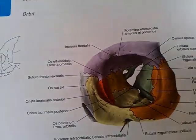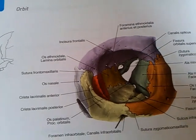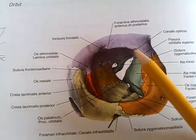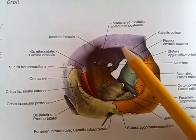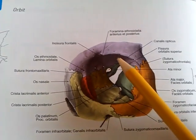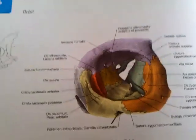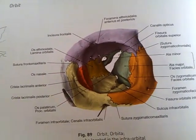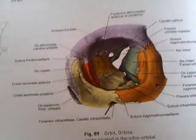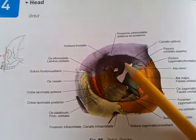Now you have the superior, medial, inferior, and lateral walls. The superior wall consists of the frontal bone — its orbital part, the orbital surface — and the sphenoid bone, lesser wing.